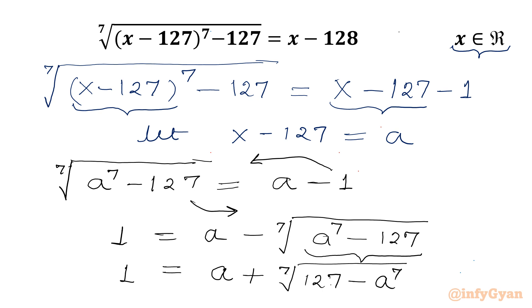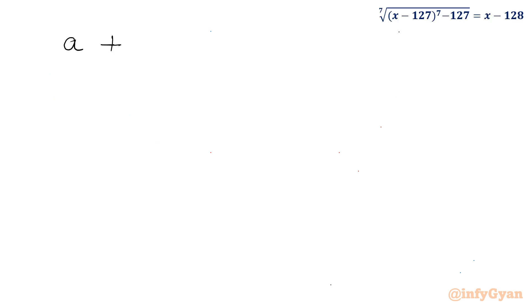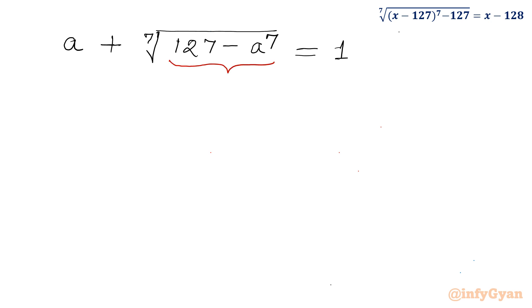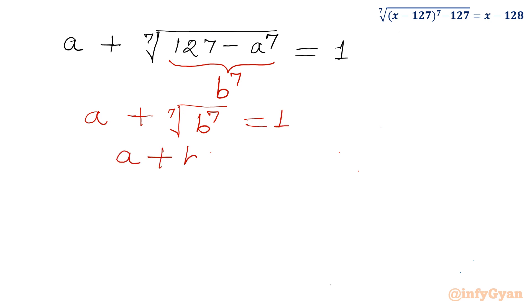LHS is 1. Let us write our equation: a plus the 7th root of (127 minus a power 7) equals 1. Now I will consider a second substitution: let the radicand be b power 7, so 127 minus a power 7 equals b power 7. Our equation then becomes a plus the 7th root of b power 7 equal to 1, or a plus b equal to 1.